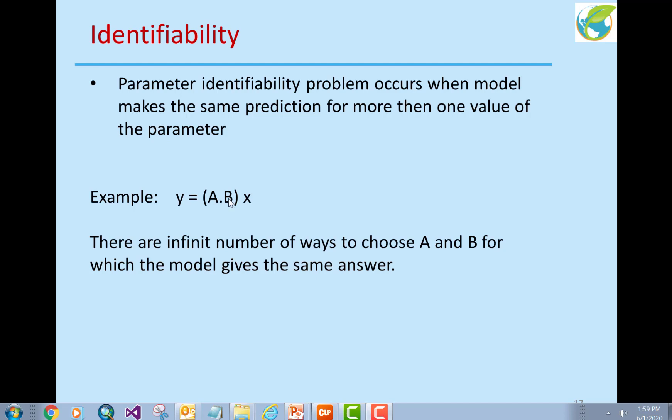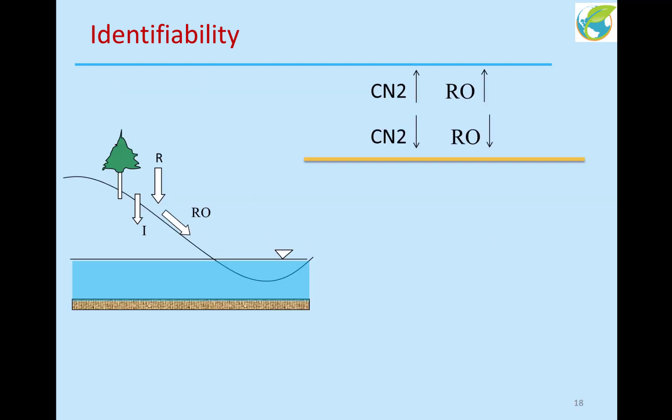Here is another example for our situations. Take such a watershed. For example, you have rainfall and this rainfall divides into runoff and infiltration at the surface. Now we know that if I increase CN2, runoff will increase. If I decrease CN2, runoff will decrease.